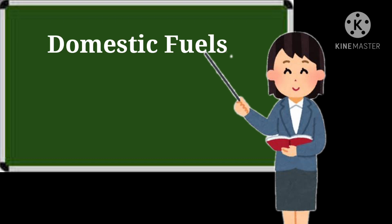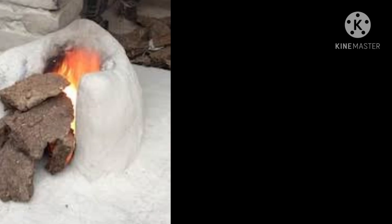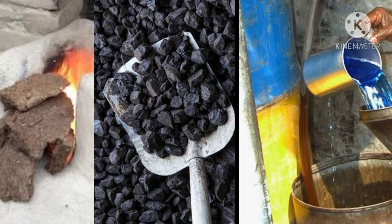Now children, we will talk about the domestic fuels — gharon mein istimaal hone waale fuels ke baare mein. In the early ages, man discovered fire and learned cooking. Us samay sirf wood hi thi which was used as the fuel. Baad mein, cow dung cakes — jinko gaay ke uple kehte hain — koila aur kerosene, unka bhi istimaal hone laga as the domestic fuel. Even abhi tak bhi kuch gharon mein in fuels ka istimaal kiya jaata hai.